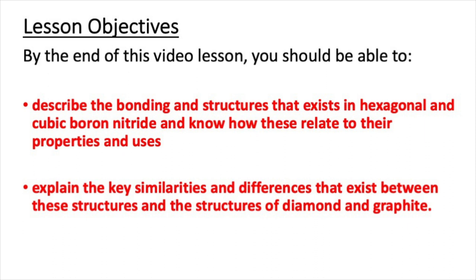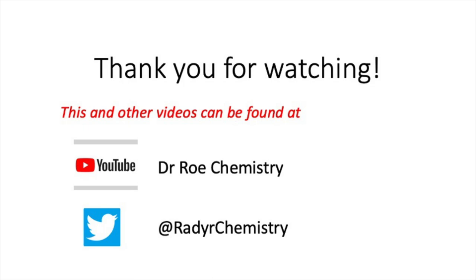That concludes this video lesson. After watching this video, you should now be able to describe the bonding and structures that exist in hexagonal and cubic boron nitride and know how these relate to their properties and uses. You should also be able to explain the key similarities and differences that exist between these structures and the structures of diamond and graphite. Please check out our YouTube channel, Dr. Rho Chemistry, which has lots of GCSE, AS and A-level videos, and our Twitter site at Radachemistry.